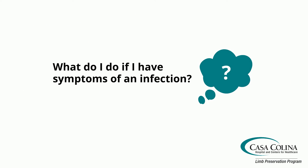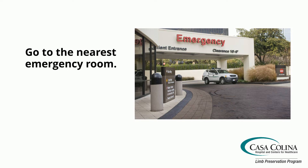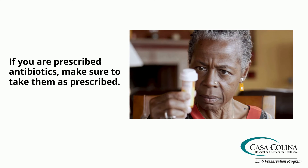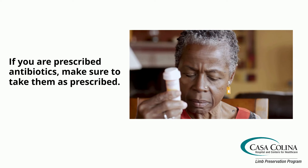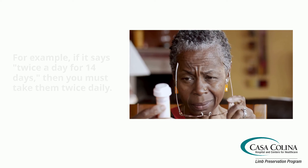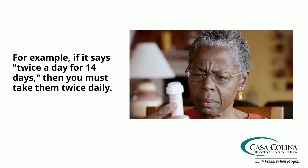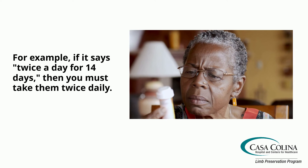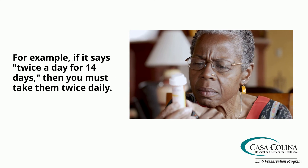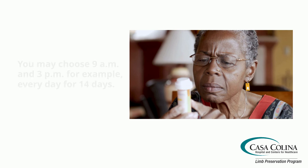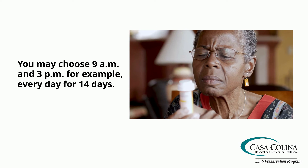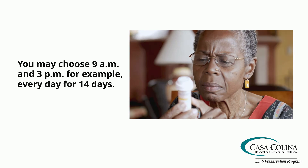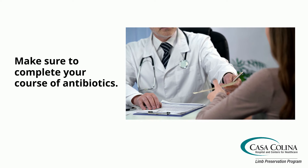What do I do if I have symptoms of an infection? Go to the nearest emergency room. Do not wait. If you are prescribed antibiotics, make sure to take them as prescribed. For example, if it says twice a day for 14 days, then you must take them twice daily — you may choose 9 a.m. and 3 p.m., for example — every day for 14 days. Make sure to complete your course of antibiotics.